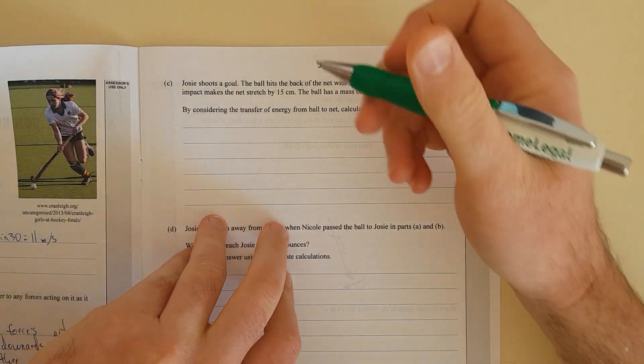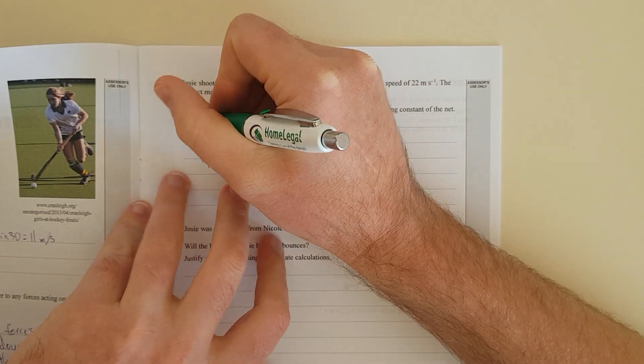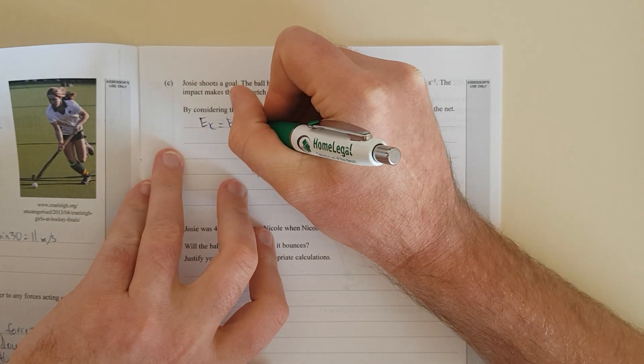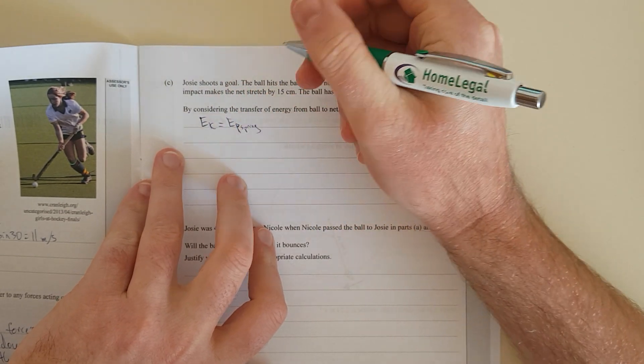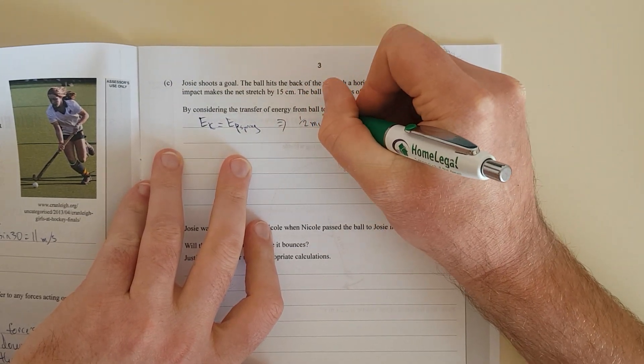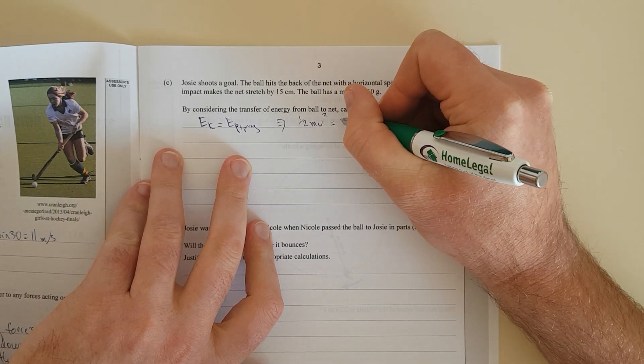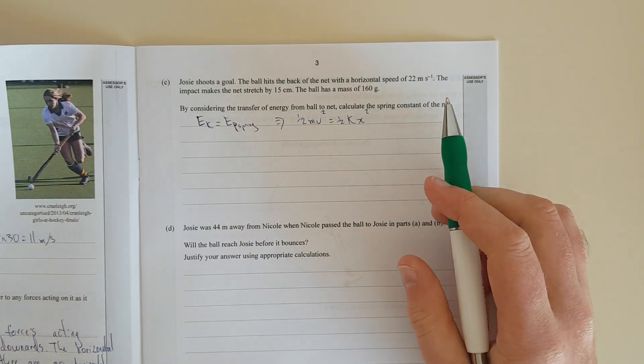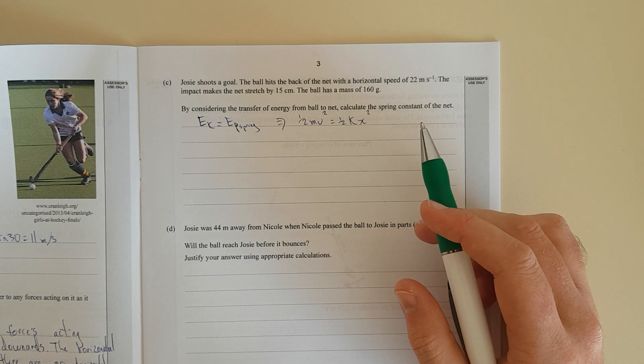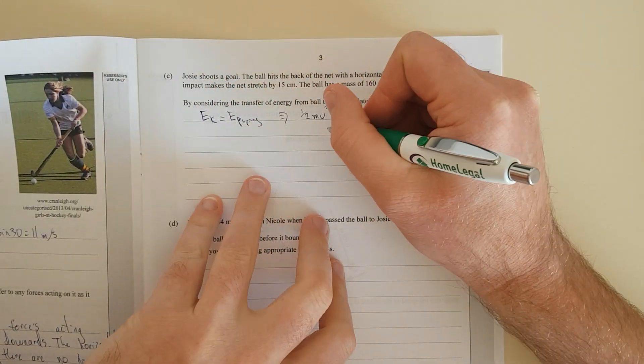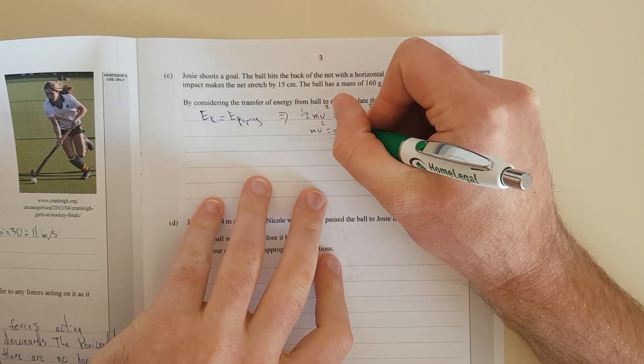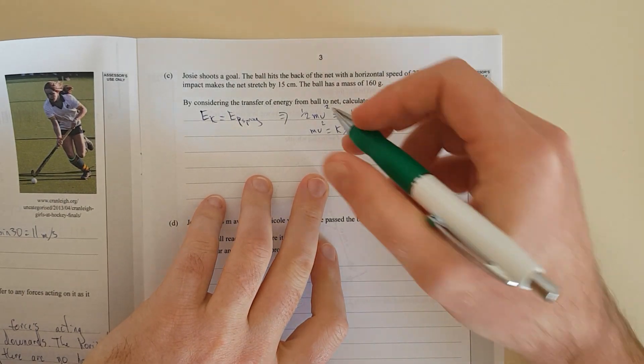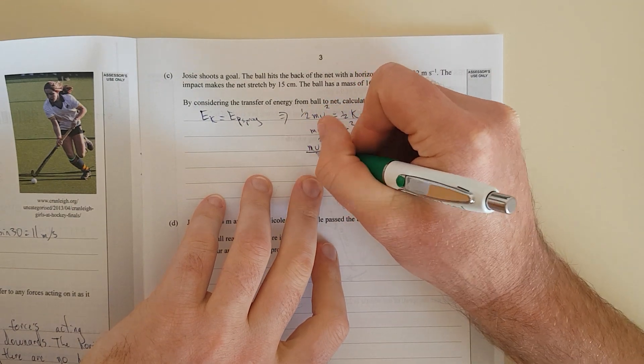You've got kinetic energy converting to spring energy, so Ek equals Ep spring. That is basically half mv squared equals half kx squared. Notice you don't have the negative there because there's no such thing as negative energy. Times both sides by two, so mv squared equals kx squared. Then divide by x squared because we're trying to find the spring constant, so mv squared over x squared equals k.